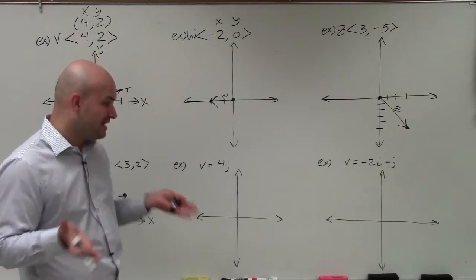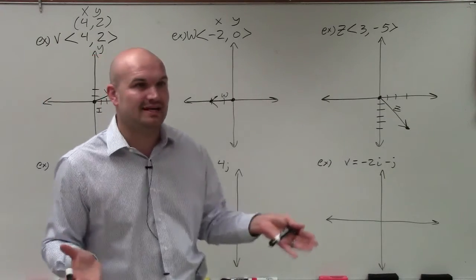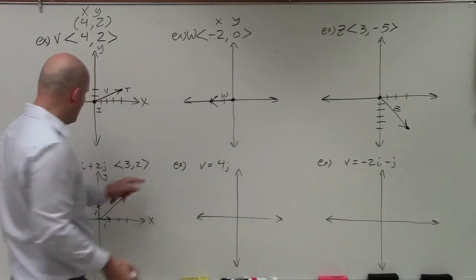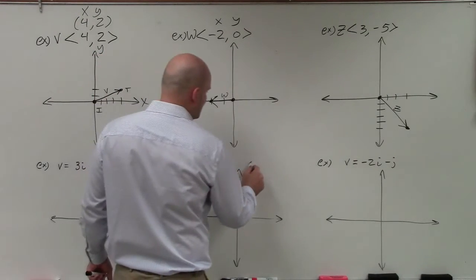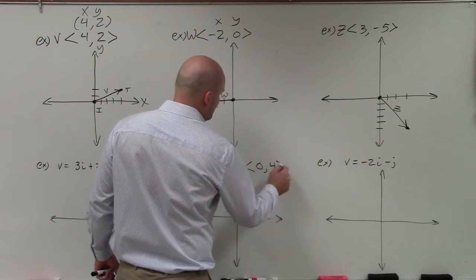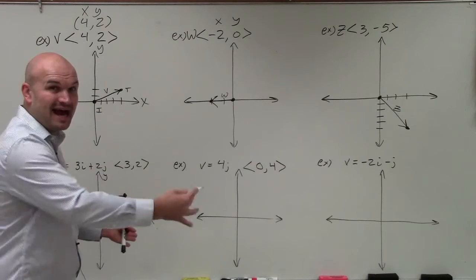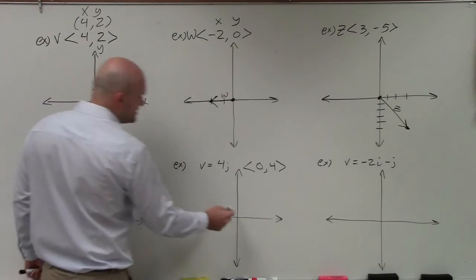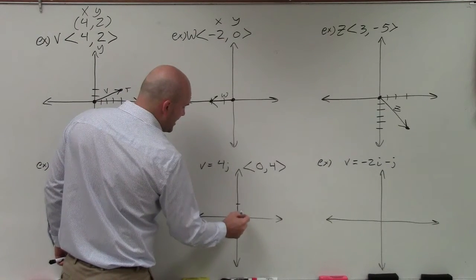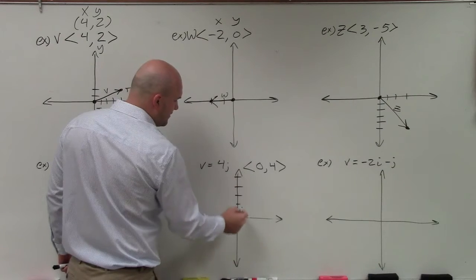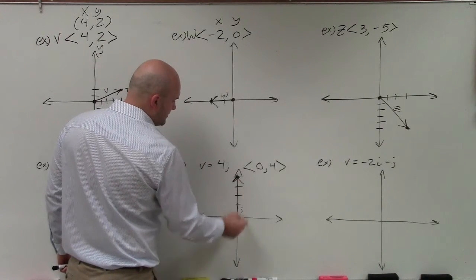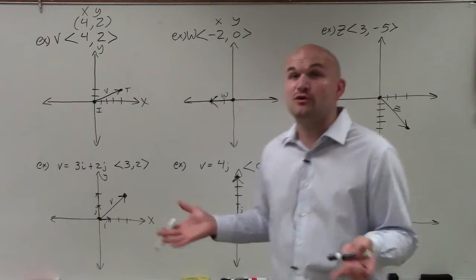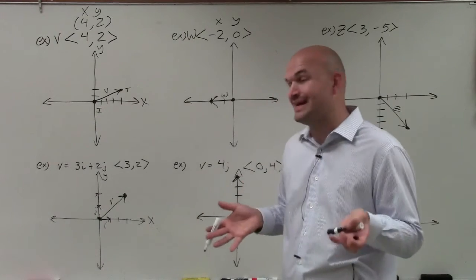Now we get onto this one. A lot of times this one gets confusing when people say, oh, I don't have an i. What do I do with i? Just like what we did in our component form, j represents our y-coordinate. So if we wanted to think about this in component form, it'd be (0,4). So therefore, I don't have any i distance. I'm not going left to right. All I'm doing is, it's just 4j. So here is j, and I'm doing 4: 1, 2, 3, 4. And remember, again, just like our component form, our linear combination is going to have an initial point at (0,0).